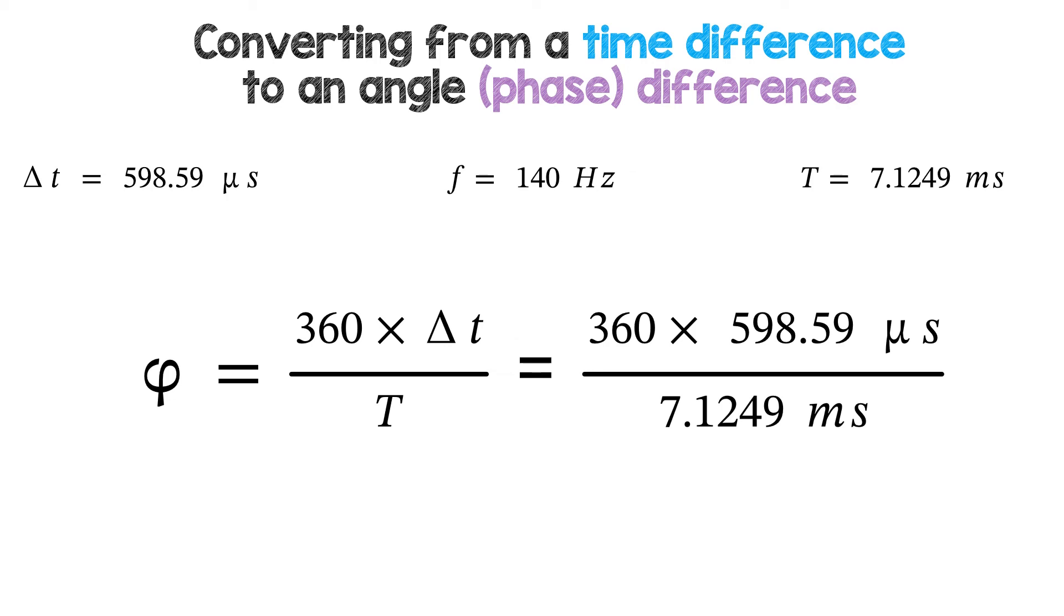So the phase difference is 360 times 598.59 times 10 to the minus 6 seconds divided by 7.1249 times 10 to the minus 3 seconds. We put those in our calculator using the correct power of 10. And from observation the phase difference we found to be 30.24 degrees. We wouldn't have got that accuracy if we hadn't changed the manual time step.